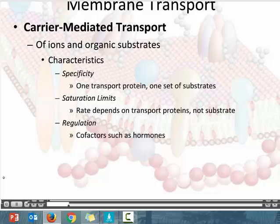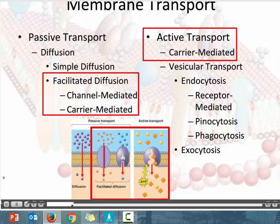The number of receptors is going to limit the ability of a cell to transport material across the plasma membrane. The more receptors that we have available, the more substances that can be transported. Carrier-mediated transport can be passive — when carrier-mediated transport is passive, we call it facilitated diffusion.